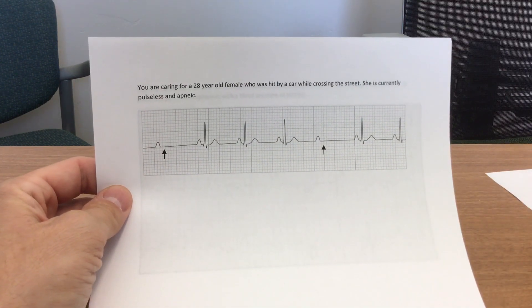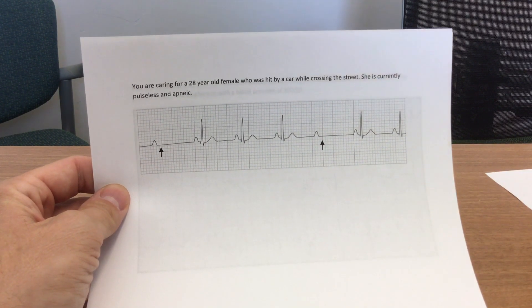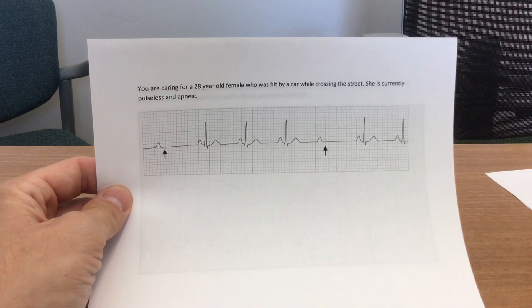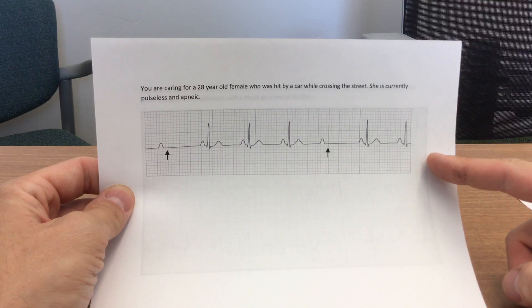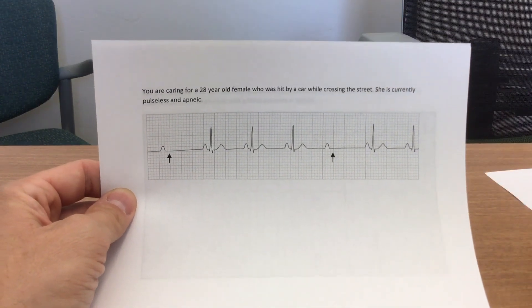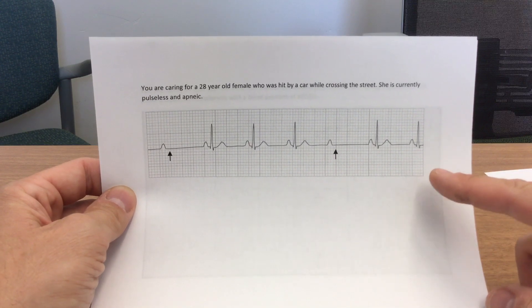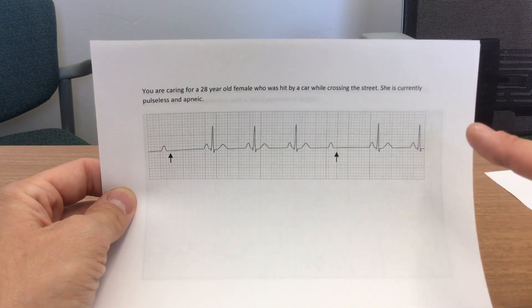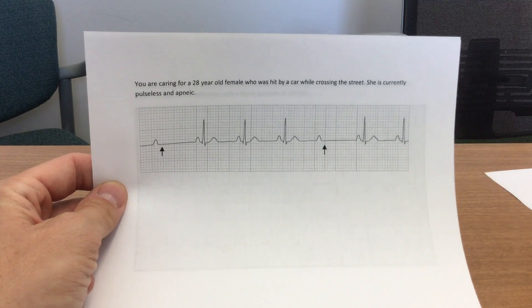You're caring for a 28-year-old female who was hit by a car while crossing the street. She is currently pulseless and apneic. We have an organized rhythm here, but this patient is pulseless and apneic — do not get fooled into saying this is some sort of heart block. An organized rhythm with no pulse makes this PEA — pulseless electrical activity.